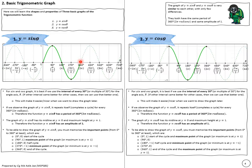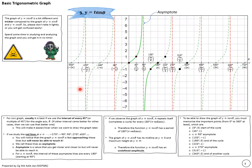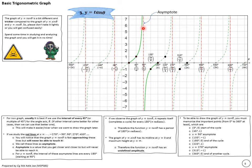Tangent is a bit different and trickier compared to sine and cos. It has a period of 180 degrees, meaning it repeats itself every 180 degrees, not 360 degrees. It has asymptote lines where the graph will never reach, and these occur every 90 degrees. You have to know these very important points. To draw the tangent graph it's best to use an interval of 45 degrees. Also note that tangent does not have an amplitude because the graph goes to infinity, so the amplitude is undefined.